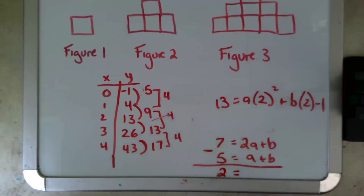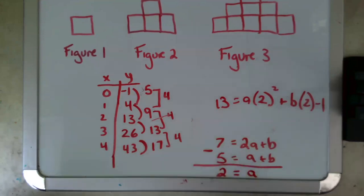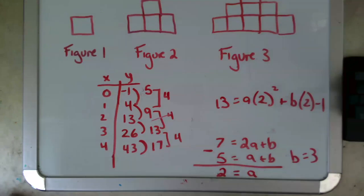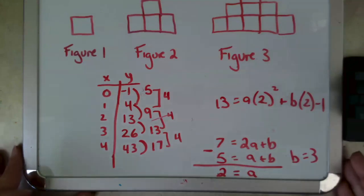Seven minus five is two. Two a minus a is a. B minus b is zero. And so I found my next variable, a equals two. And now I'll go ahead and substitute two into one of these two equations. Five equals two plus b. That means b equals three. And now I have my full quadratic equation.